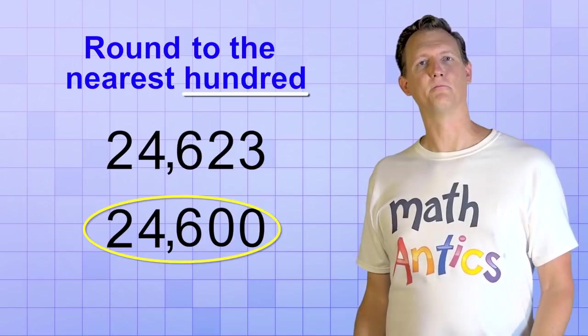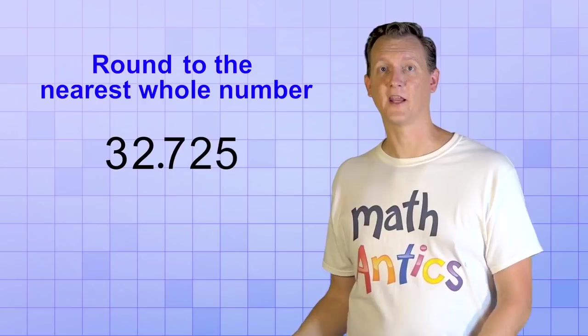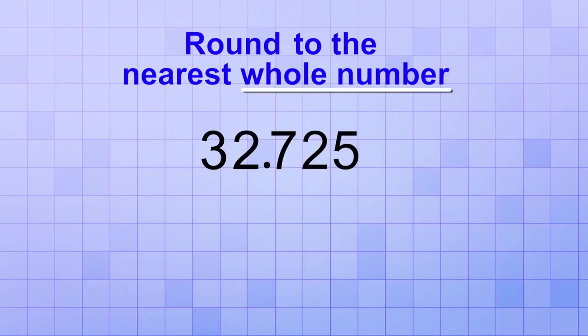Let's try another problem. This one has some decimal digits, 32.725, and we're asked to round it to the nearest whole number. That means our target digit is in the ones place. We need to round it to the nearest one. So any digits to the right of the ones place will just be replaced with zeros in the rounded version.